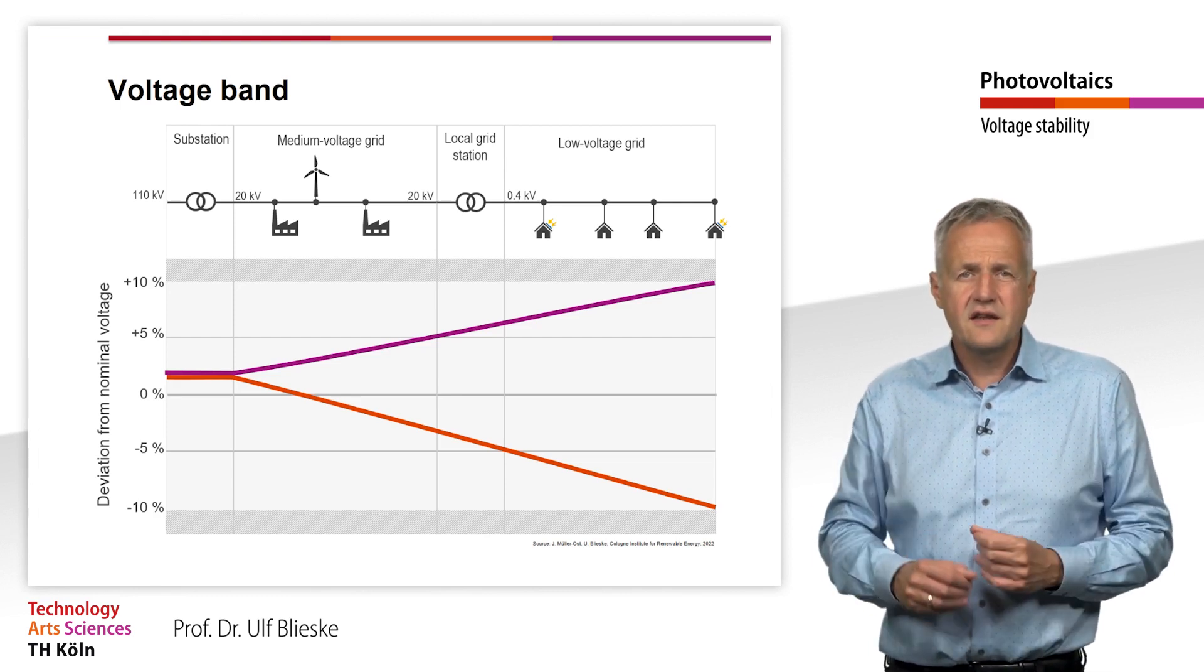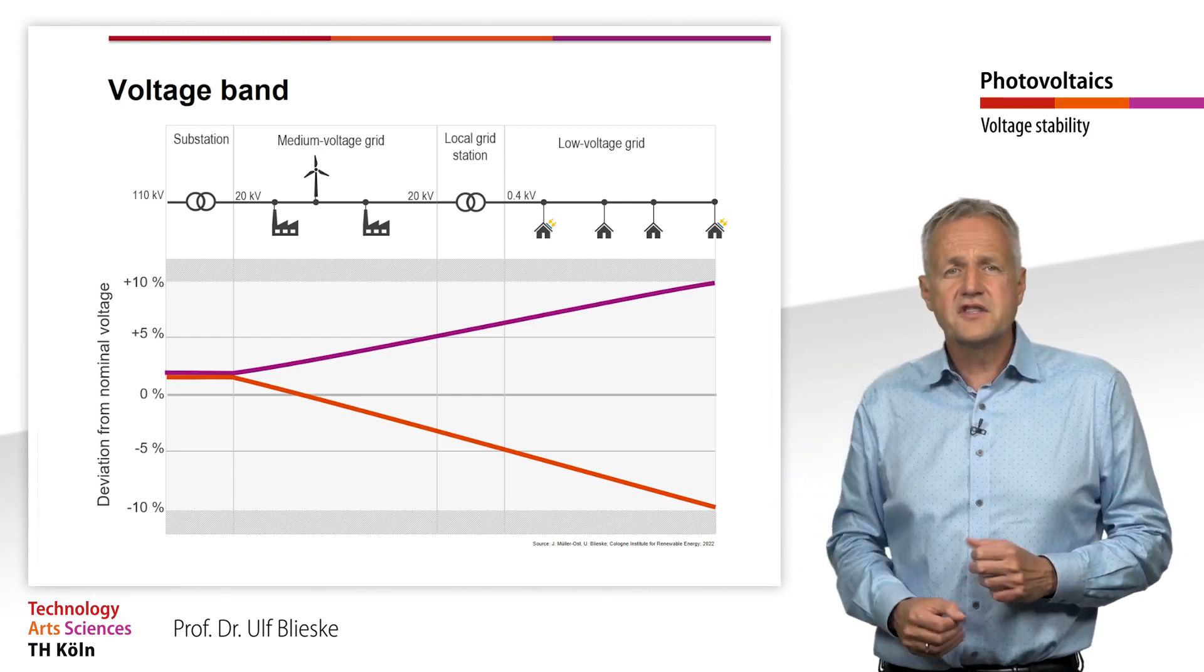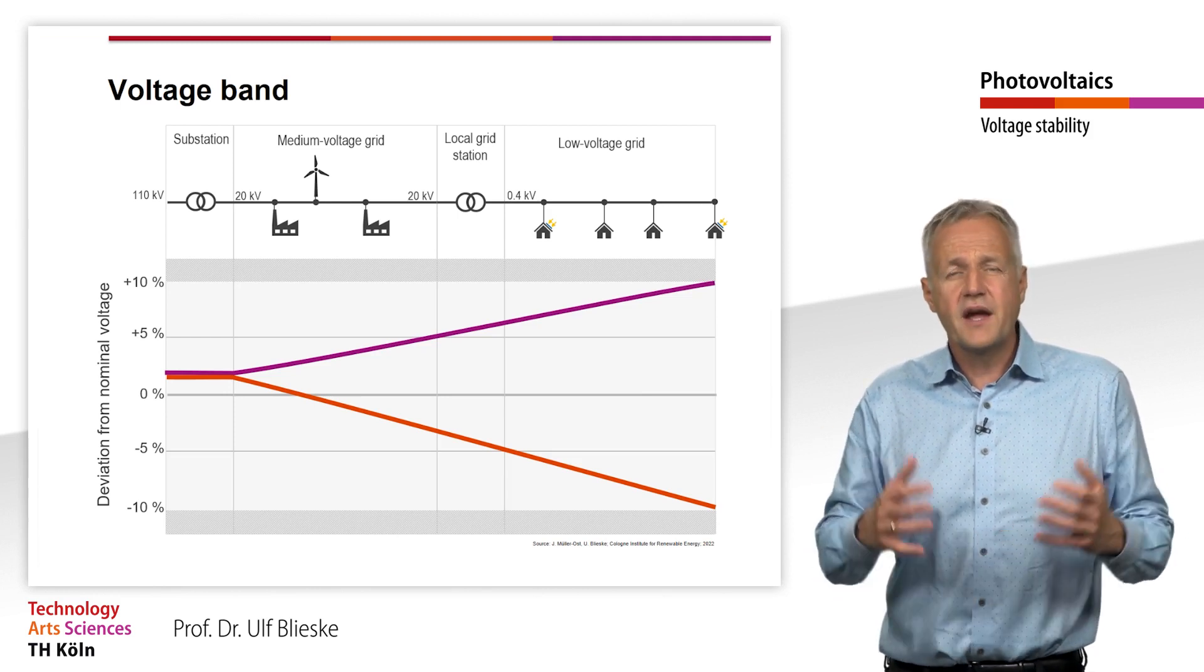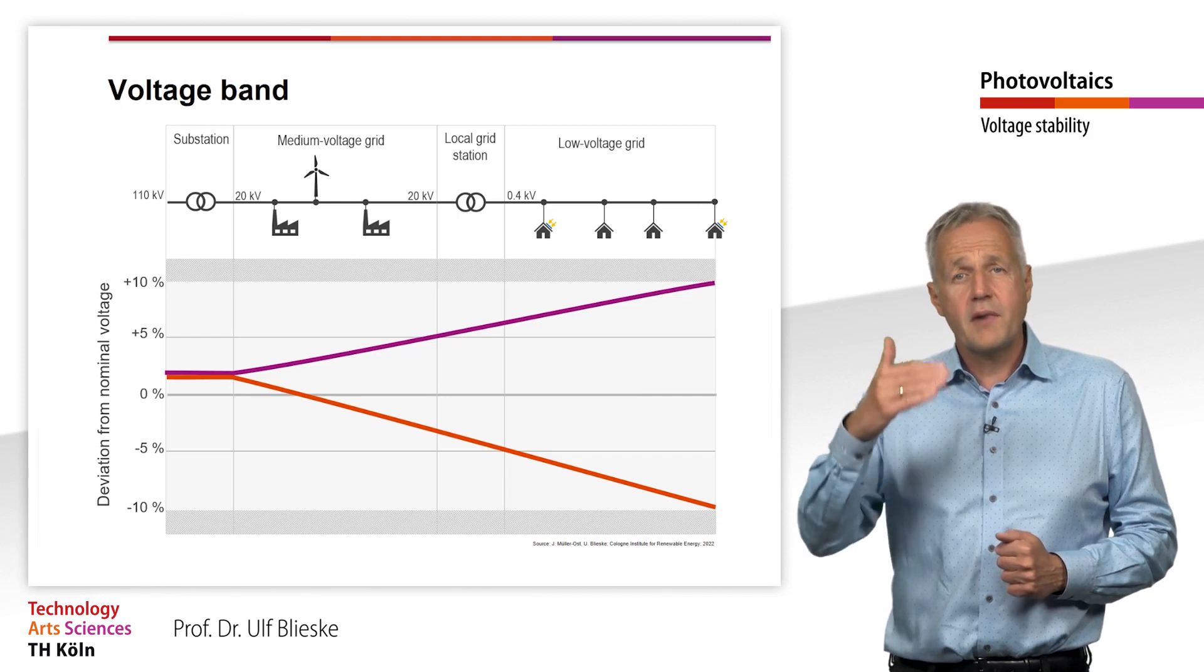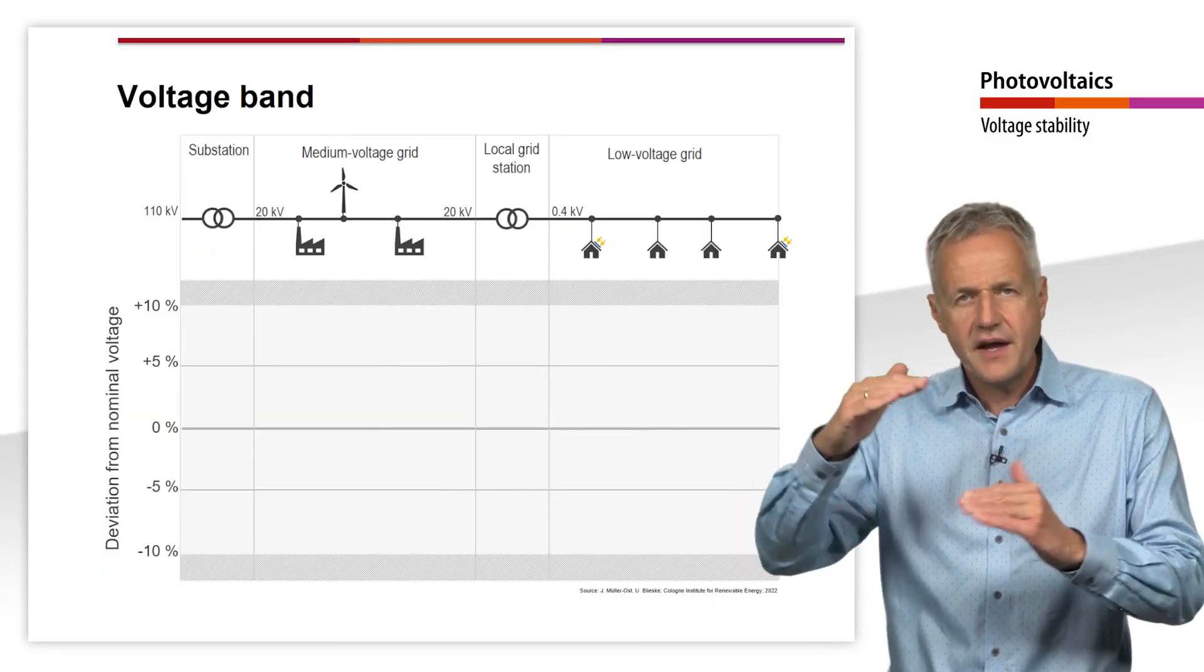And just as with the voltage drop, the grid operator must ensure that the voltage at every point in the grid remains within the voltage band even at maximum feed-in.